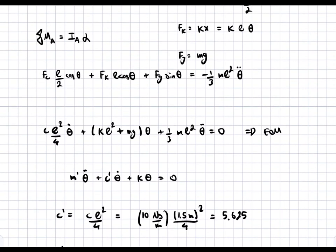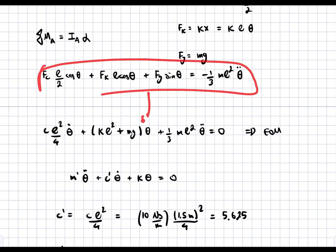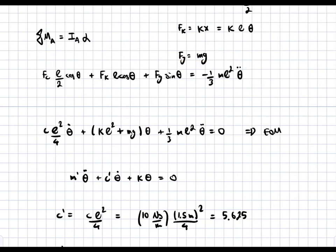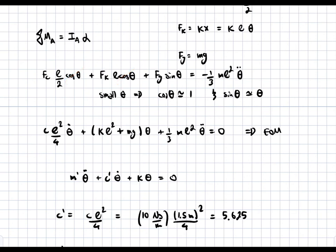To get from the general equation to the simplified form, I applied the small angle approximation. For small theta, cos(theta) is approximately equal to 1, and sin(theta) is approximately equal to theta. That's where the theta term in the Fg contribution comes from, and the cosine terms simply cancel out, becoming 1.